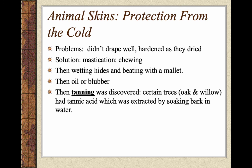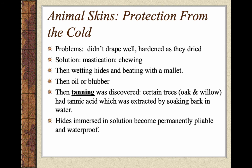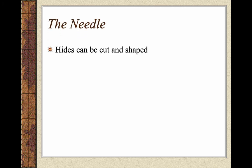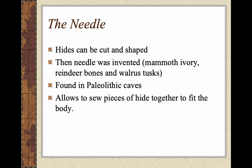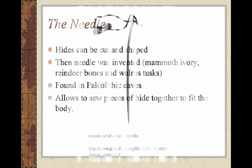What's interesting is that in ancient times, this tanning process is essentially what's used today — we just use chemicals now, but it hasn't changed much since its inception. They discovered that certain trees, particularly oak and willow, had tannic acid. They would soak the tree bark to extract the acid, then soak the animal skins in that water with the tannic acid. What it did was make the hide pliable, soft, permanently — it wouldn't harden — and it was waterproof. That's what we call tanning. We also have evidence of the first needle used to sew hides: early examples are made out of ivory, mammoth, reindeer bones, and walrus tusks, found in Paleolithic caves.